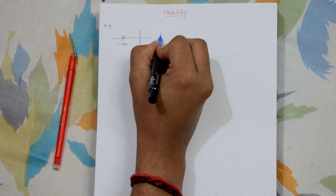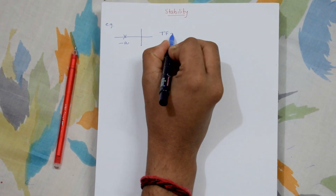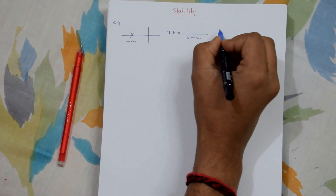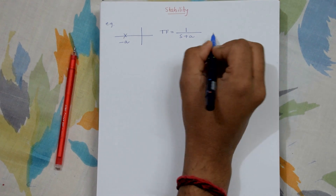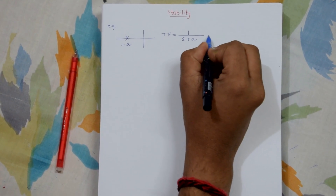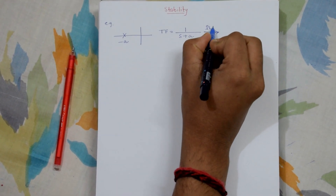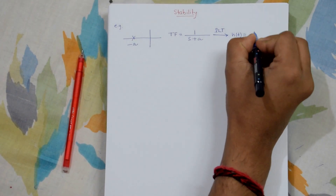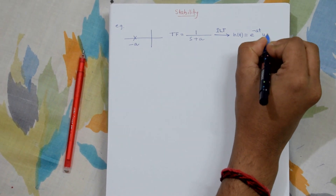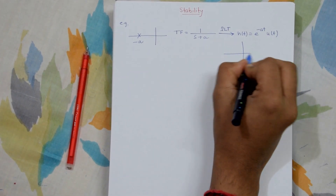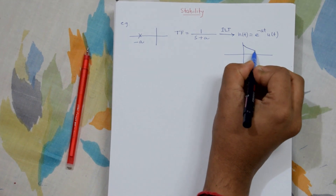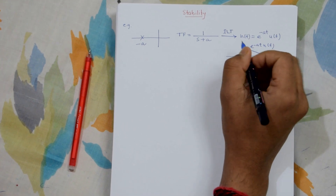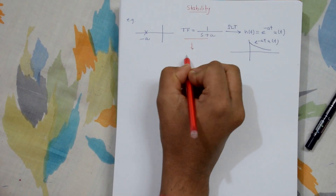For our first example, let's take a pole at minus a. The transfer function is 1 by (s + a). Taking the inverse Laplace transform gives h(t) = e^(−at) · u(t). If we plot this graph we get an exponentially decreasing function, which is a stable one, so the transfer function is stable.